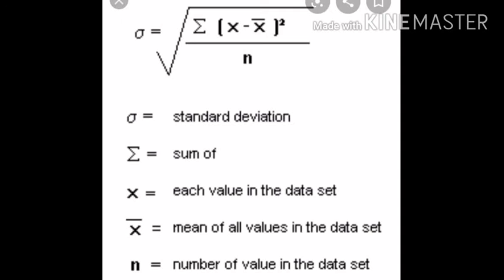Precision is determined by a statistical method called standard deviation. The formula is: s = √[Σ(xi − x̄)² / n], where x represents each value in the data set, x̄ is the mean of all values, and n is the number of values. A high standard deviation indicates low precision, and a low standard deviation indicates high precision.